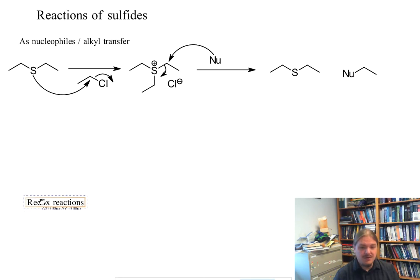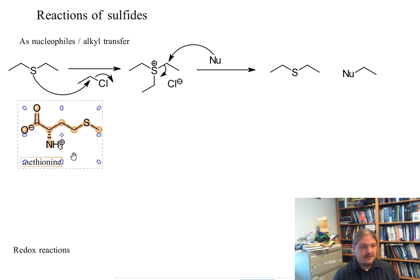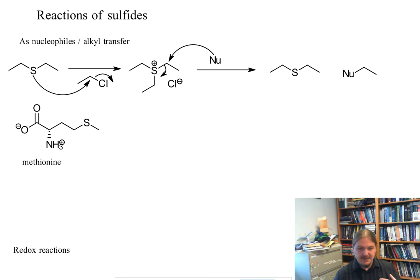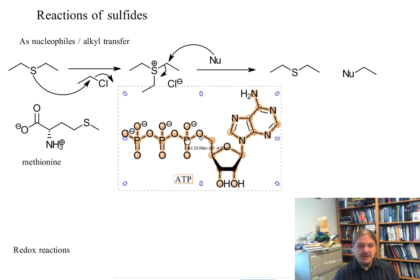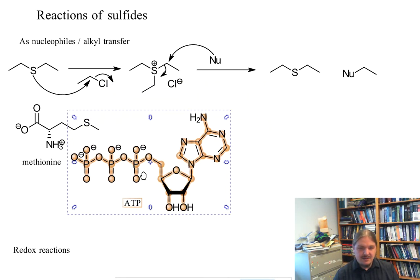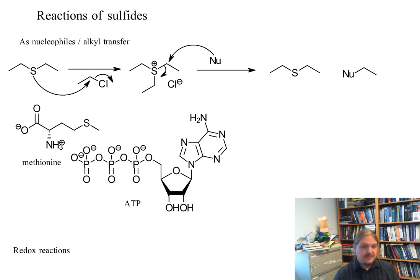One of the most important variations of this particular reaction involves methionine. Here's methionine—it's an amino acid with a sulfide in its side chain, and methionine reacts with ATP in one of these kinds of alkylation reactions.